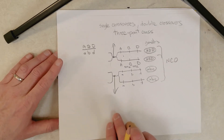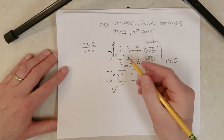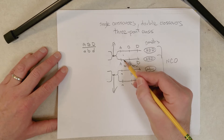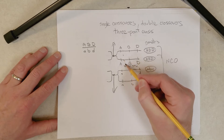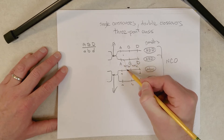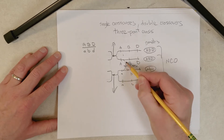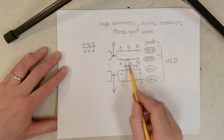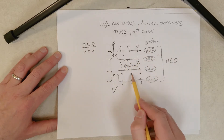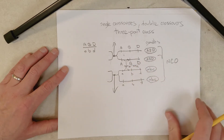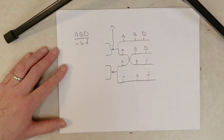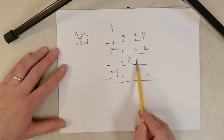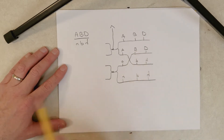So what happened was we essentially joined this piece down here and this piece up here. That's why we have big B and big D still on top, and little b and little d still on the bottom.